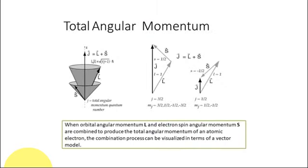The total angular momentum is given by J, which is the sum of L and S. Both L and S are vectors, so vector addition applies: J equals L plus S. The total angular momentum quantum number is denoted by J, and the total angular momentum magnitude is given by the square root of J(J+1) times h/2π.